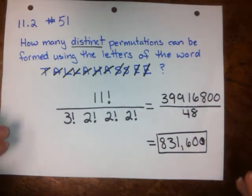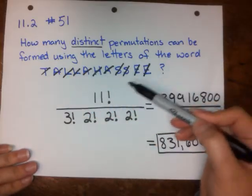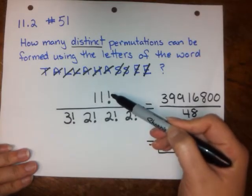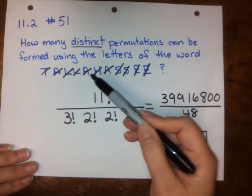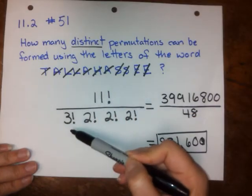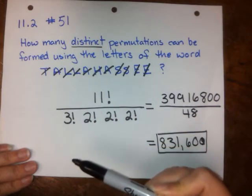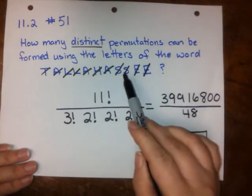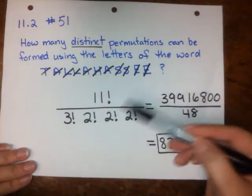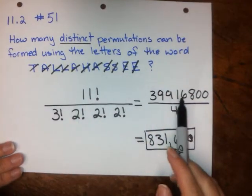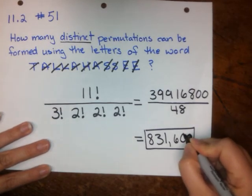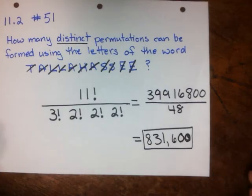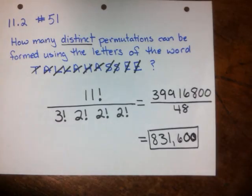So to figure out the number of distinct permutations using the letters of a word, what we do is count up all of the letters and put that number factorial in the numerator. Then we look for any letters that show up more than once in the word. If it shows up 3 times, like the A did in Tallahassee, we put a 3 factorial in the denominator. If it shows up twice, like the L, the S, and the E, we put 2 factorials for each of those in our denominator. Then we multiply everything out, simplify, and we come up with 831,600 distinct permutations that can be formed using the letters of the word Tallahassee.